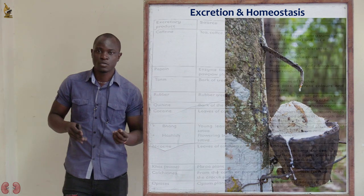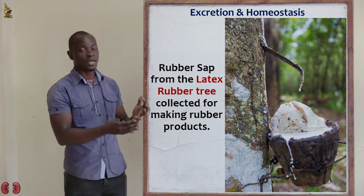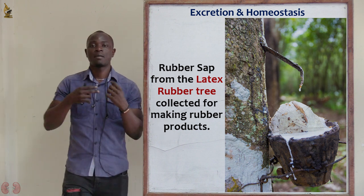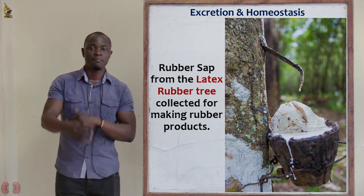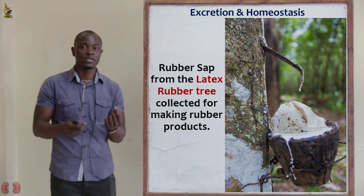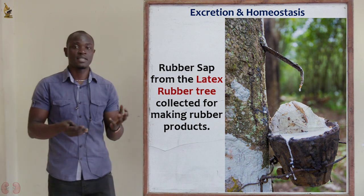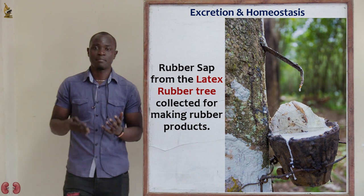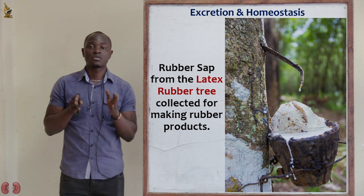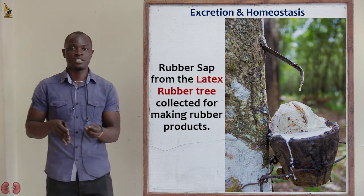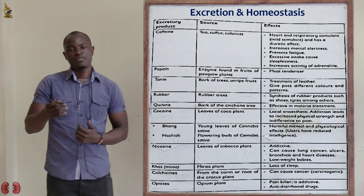We also have rubber, obtained from the rubber tree. The rubber we use — for motor vehicles, rubber bands, and erasers — is refined rubber processed in factories. For vehicle tires, rubber is combined with sulfur to make it hard.